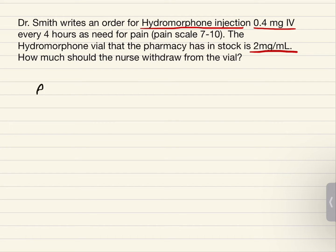Let's do this in ratio or proportion first. First we're going to write down the known, 2 mg per ml. That's the concentration of the vial that we have in stock. Equal 0.4 mg over x ml.